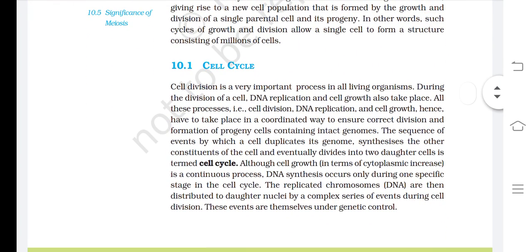Cell Cycle. Cell division is a very important process in all living organisms. During the division of a cell, DNA replication and cell growth also take place. Cell division, DNA replication, and cell growth have to take place in a coordinated way to ensure correct division and formation of progeny cells containing intact genomes. The sequence of events by which a cell duplicates its genome, synthesizes other constituents, and eventually divides into two daughter cells is called the cell cycle.